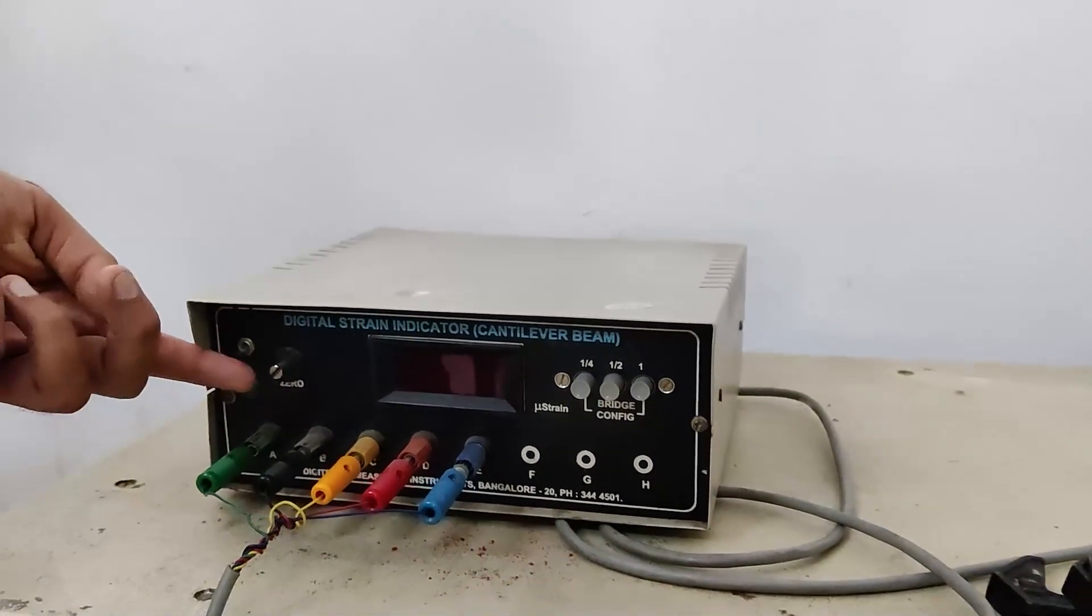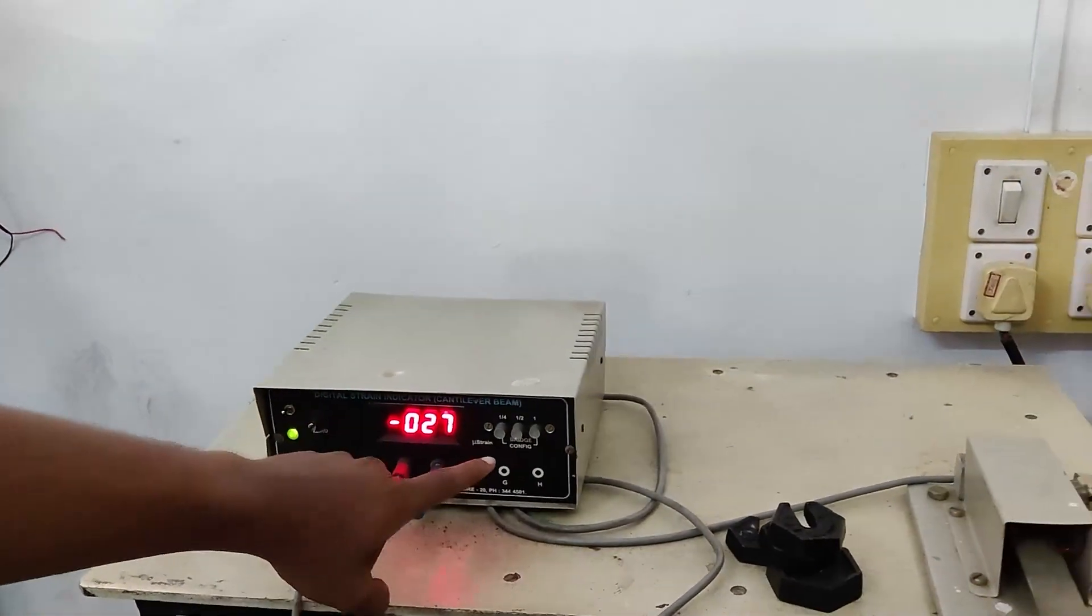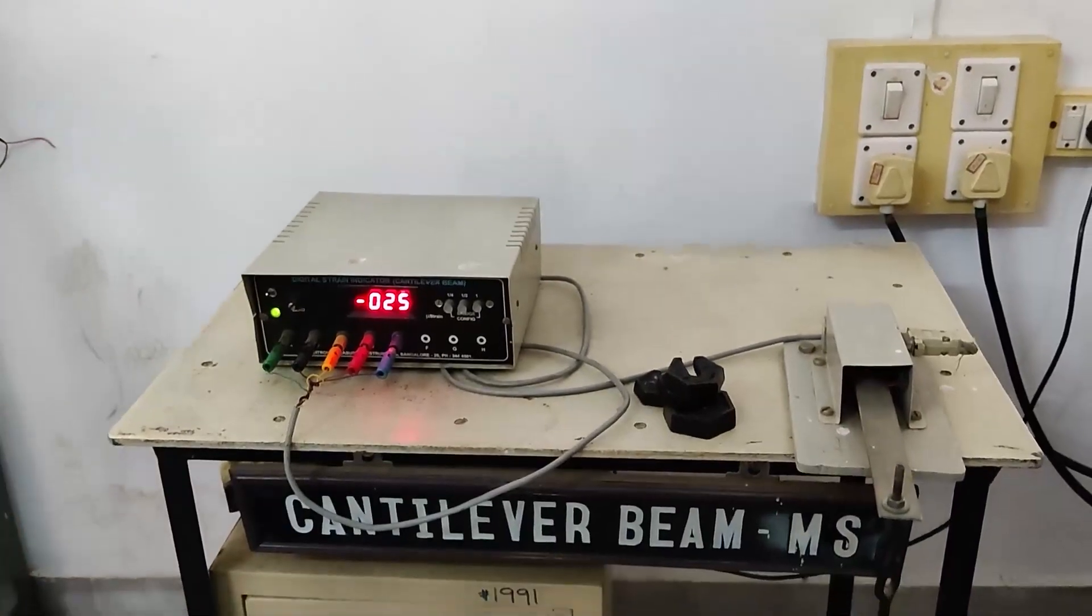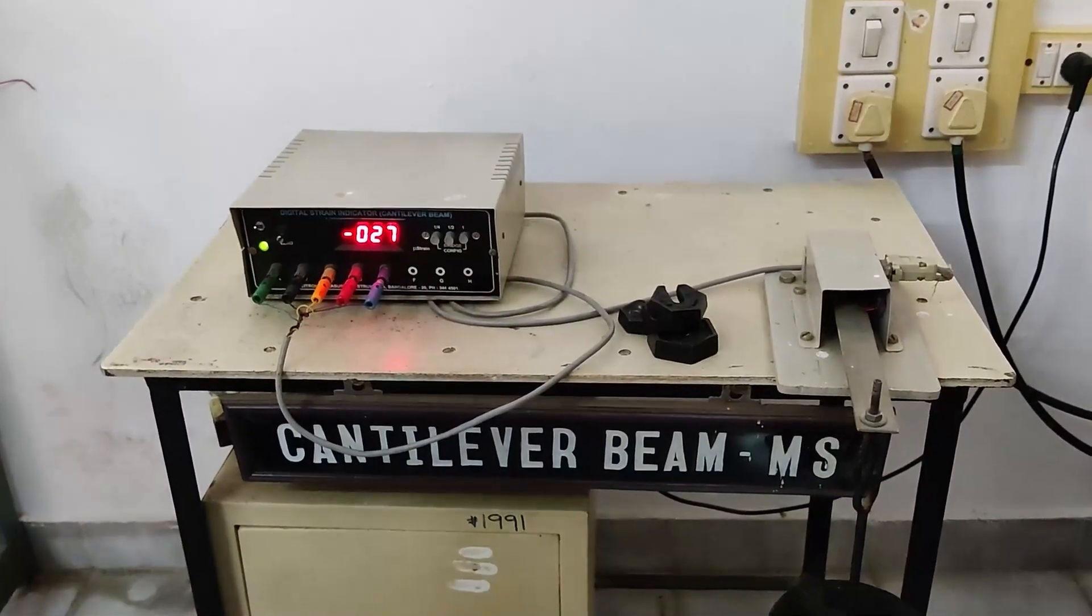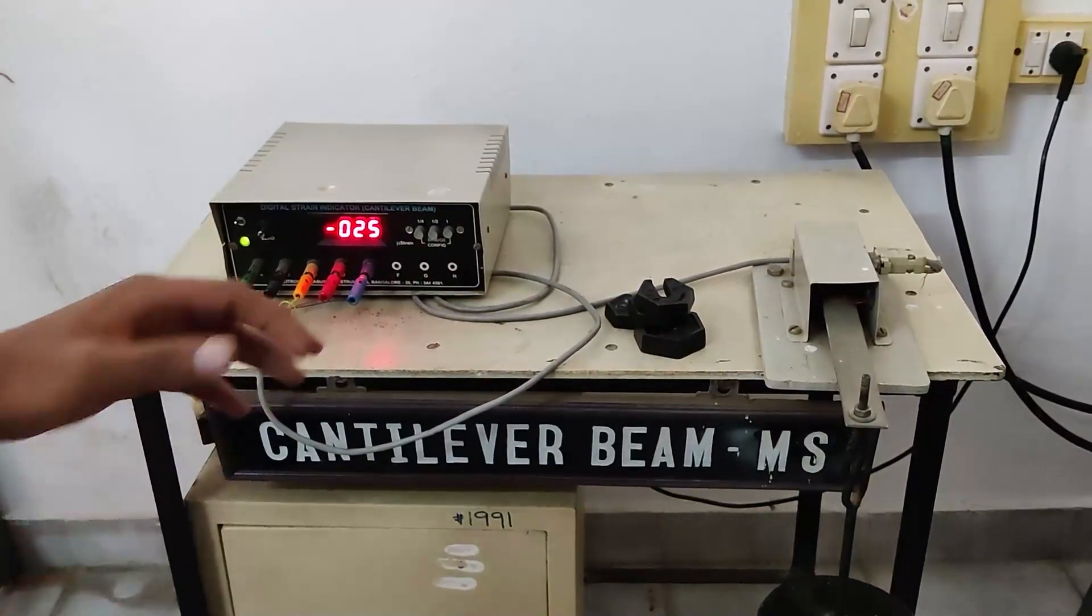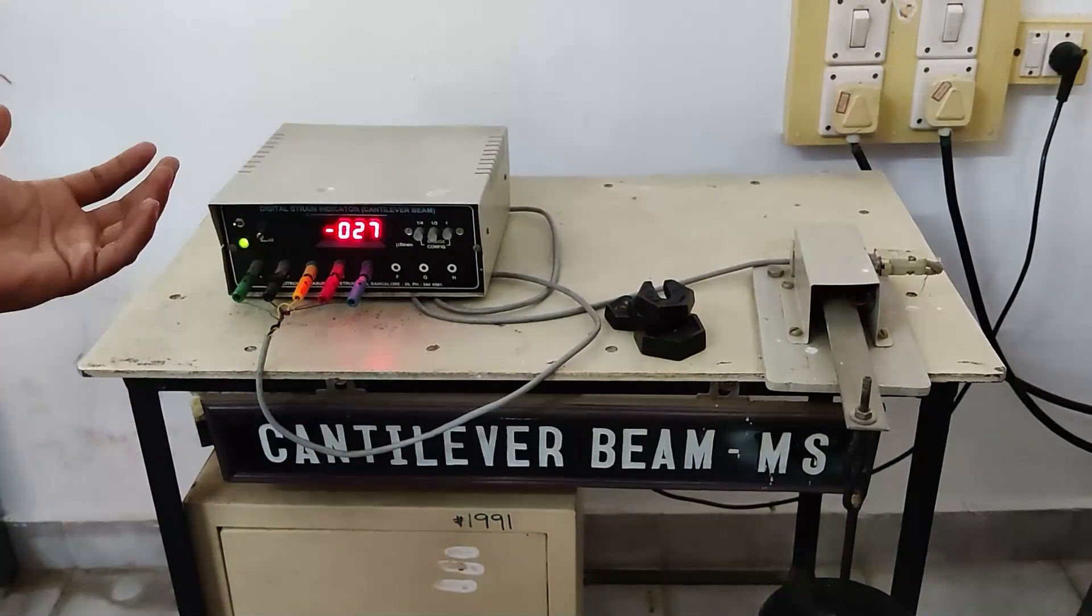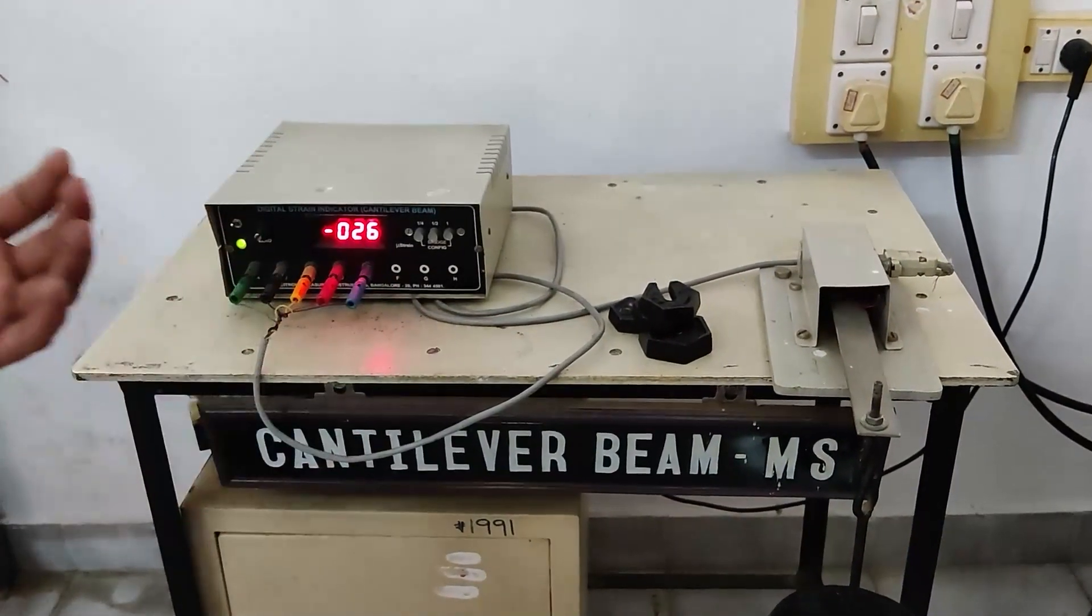So basically the difference is, as you guys know, the Wheatstone bridge has four resistors, right? And in half Wheatstone will be having two resistors, and in quarter will be having only one.